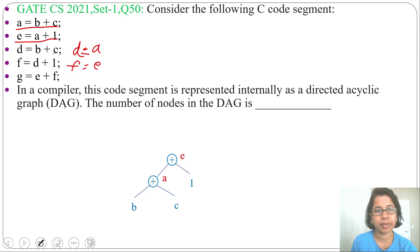Next, d equals b plus c. We already simplified d equals a. We'll just add d with label a. Next, f equals d plus 1. We already simplified and we found f equals e. e is already there, just add the label f with e.